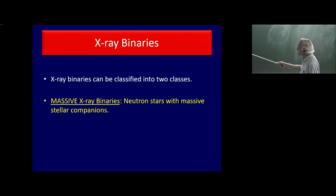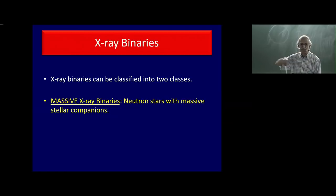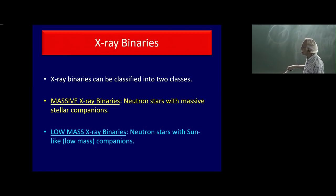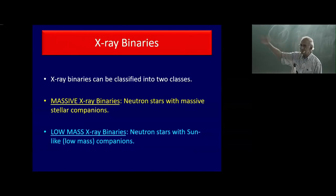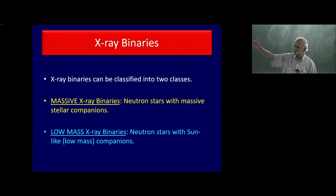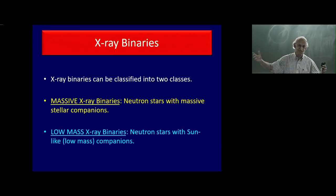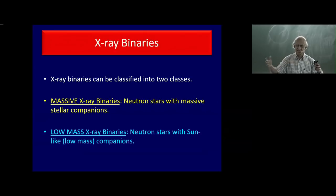Today, many hundreds of such X-ray binaries have been detected both in our galaxy and in external galaxies, mostly by the Chandra Observatory. These X-ray binaries can be broadly classified as follows: massive X-ray binaries, where a neutron star has a massive stellar companion from which it is accreting, and low-mass X-ray binaries, where the neutron star has a companion of roughly one solar mass.